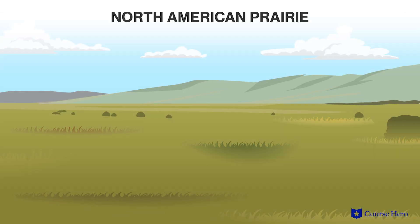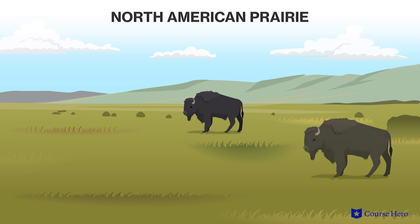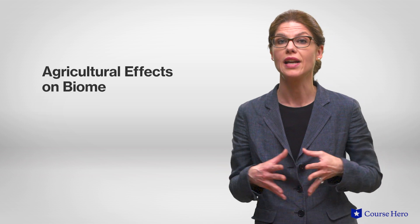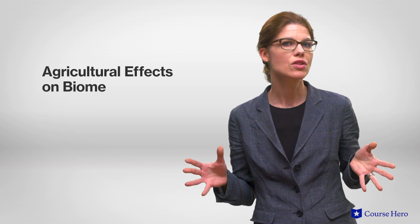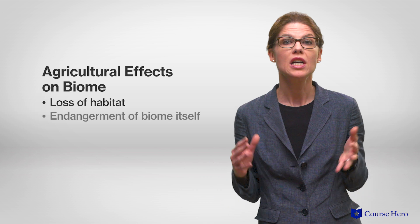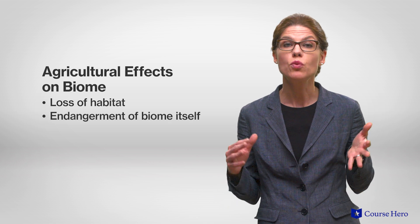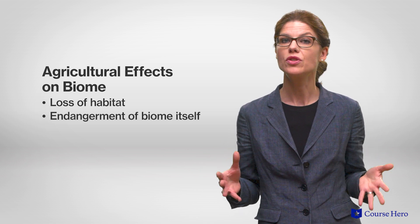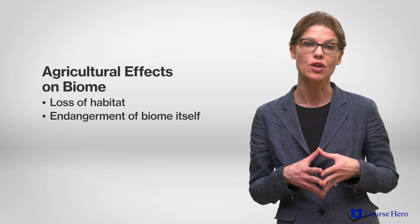An example of a grassland is the North American prairie, once home to large numbers of bison. Once settlers moved into this region, the prairie was converted to agricultural land. Habitat loss caused by agriculture has endangered this biome, as farmers push wildlife out of their natural habitat in order to grow crops or graze livestock.